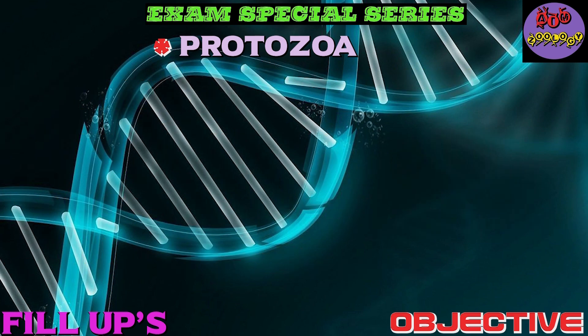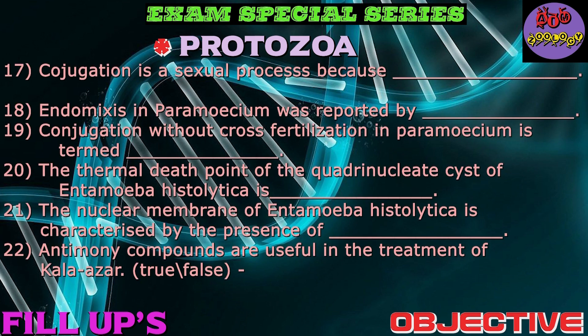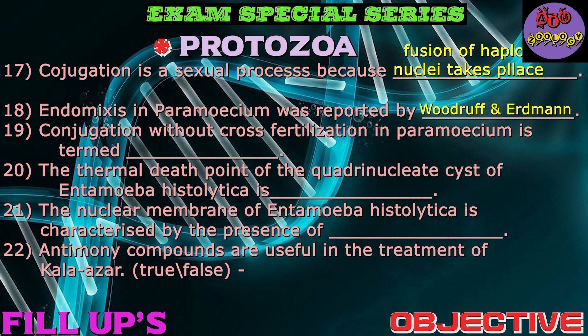Question number seventeen: Conjugation is a sexual process because the answer is fusion of haploid nuclei takes place. Question number eighteen: Endomixis in Paramecium was reported by Woodruff and Edmund. Question number nineteen: Conjugation without cross fertilization in Paramecium is termed? Answer: Cytogamy.